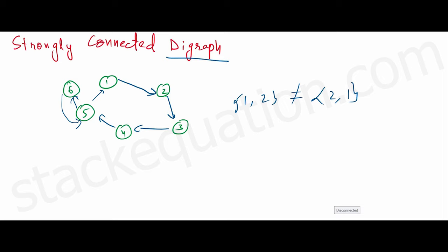This is a directional graph and also a strongly connected directional graph. Why strongly connected? Because if we take any vertex as a reference point, we have a path to reach any other vertex.